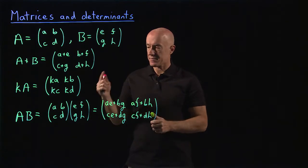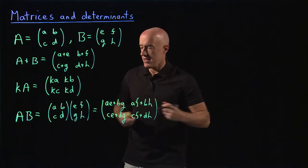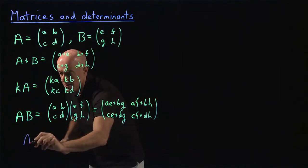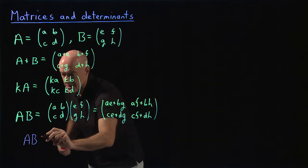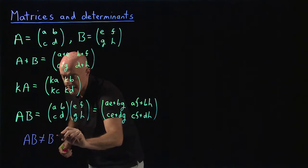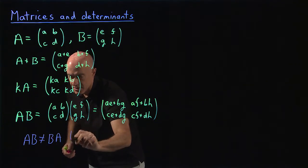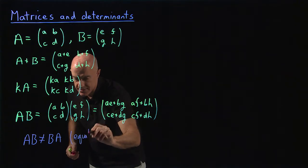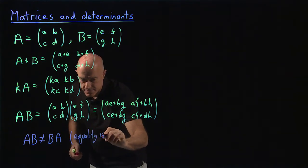After you do this a few times, you'll remember: across the first row down the first column gives you the element in row one column one; across the first row down the second column gives you row one column two; across the second row down the first column gives you row two column one; and across the second row down the second column gives you row two column two.